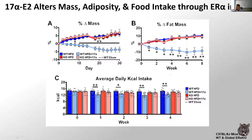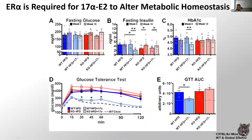We then went on to look at global ER-alpha knockout mice to see if ablating ER-alpha eliminates the effects of this estrogen. The key finding is that the knockout receiving the estrogen versus the wild type receiving the estrogen shows diverging curves — there is a clear ablative effect of removing ER-alpha on body mass, fat mass, and caloric intake. When we look at metabolic homeostasis, insulin and HbA1c go down significantly in wild types but not knockouts. Similarly, glucose tolerance improves dramatically in wild types — they mimic the low-fat diet control group despite weighing about 15 grams more.